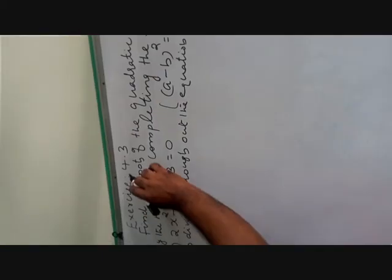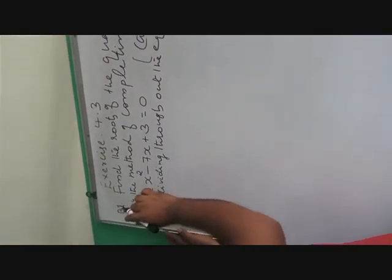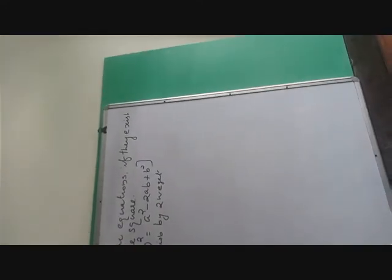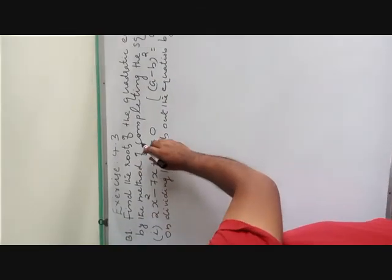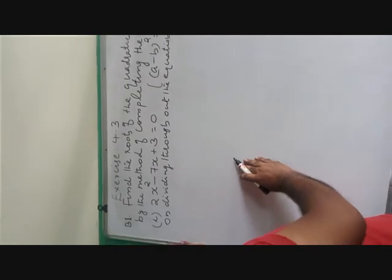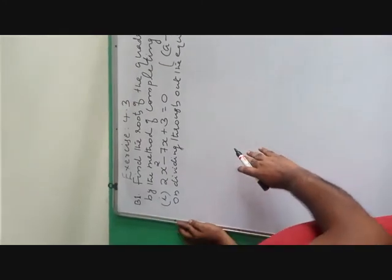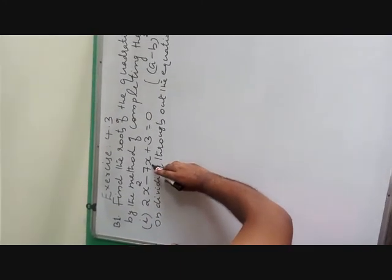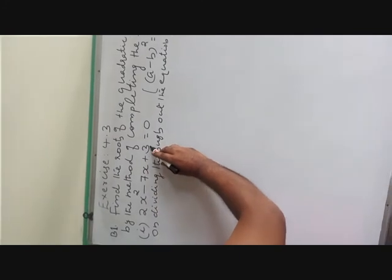Exercise 4.3, question number B1: Find the roots of the quadratic equations, if they exist, by the method of completing the square. The first question is 2x squared minus 7x plus 3 is equal to 0.